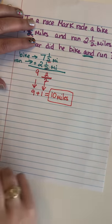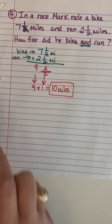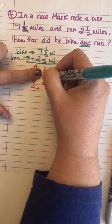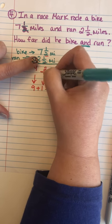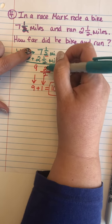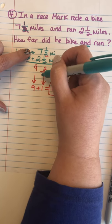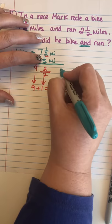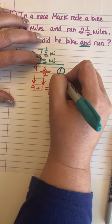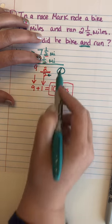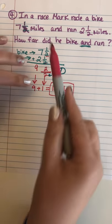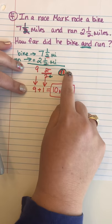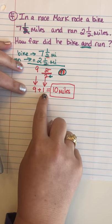That was the total he ran. Let me go over that again. I had nine and two-halves, which is not a regular mixed fraction — it's an improper fraction because the numerator and denominator are equal. If I had a circle cut into two pieces and I shaded two of the two pieces, I essentially have one whole circle shaded. So it's like nine plus one, which is ten.